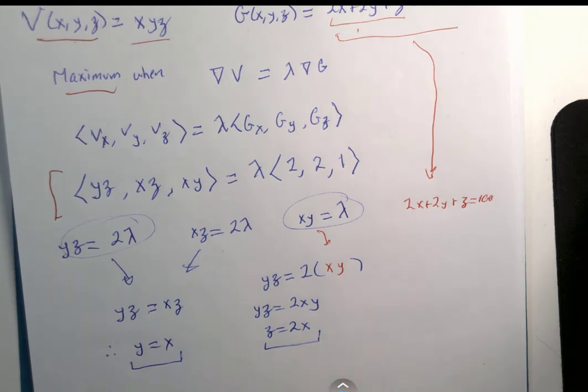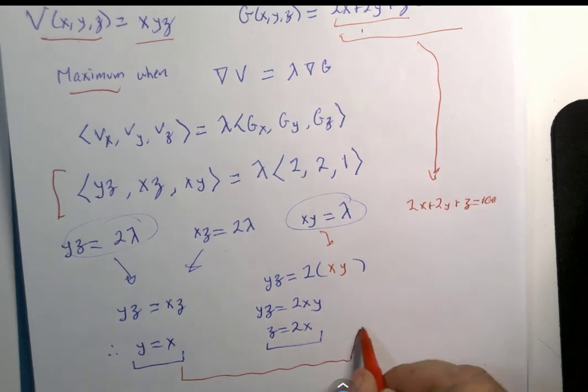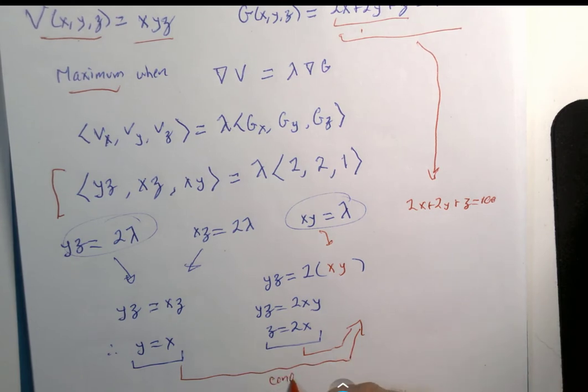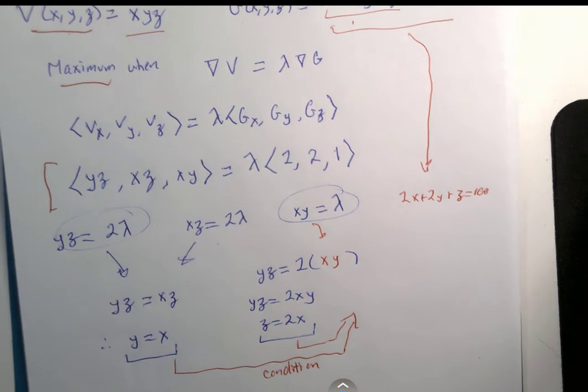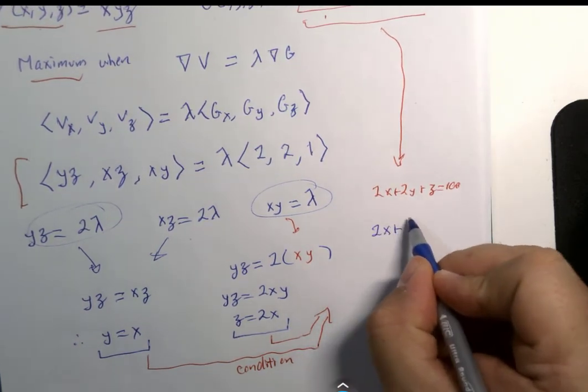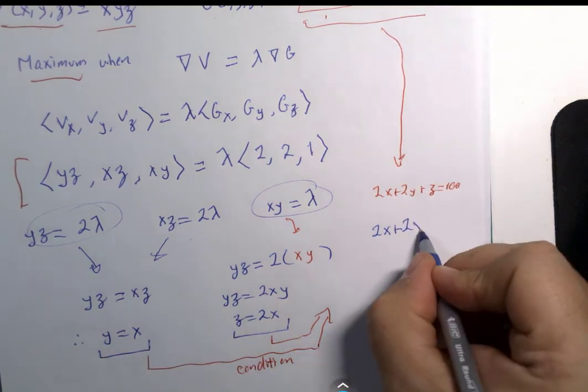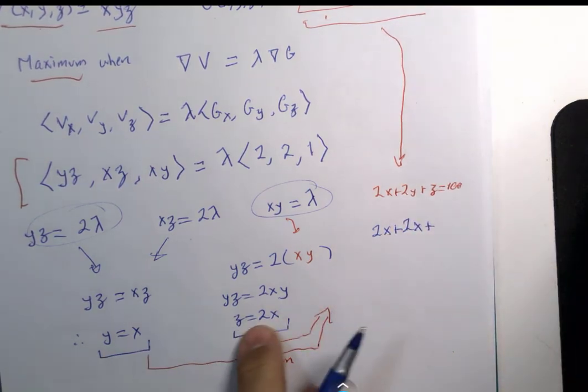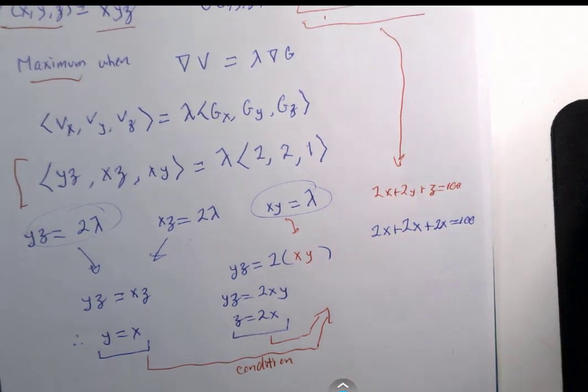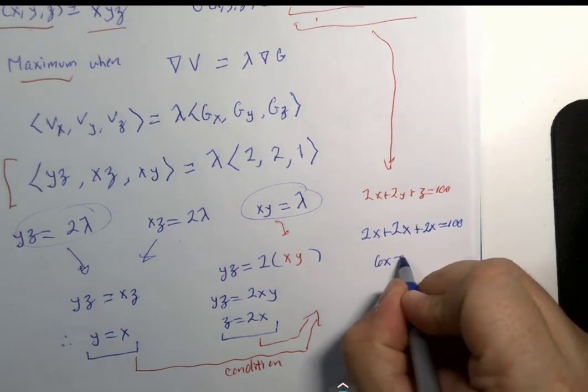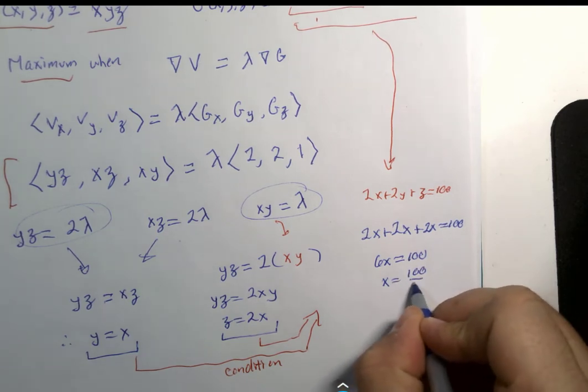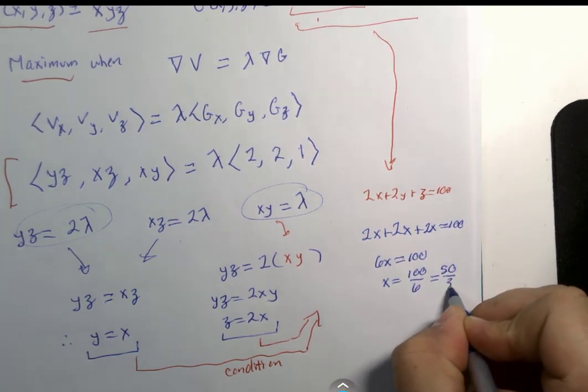Now we're going to take this and this, and we're going to go to our condition, our constraint. So I have 2X plus 2, but Y equals X, plus Z, but Z equals 2X, and that equals 100. 6X equals 100, X equals 100 divided by 6, or 50 divided by 3.